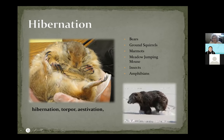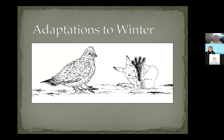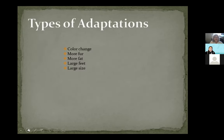Resistance covers all the other animals that stay active in the wintertime and must adjust to conditions in order to survive. Adaptations to winter include having really big feet so you can float on top of the snow — even birds have hairy feet. The polar bear has fur all the way around its paws to give it that float effect and a little more traction on the snow. The different types of physical adaptations include color change, more fur, more fat, large feet, and large overall size.